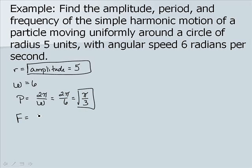And our frequency is equal to omega, angular speed, divided by 2 pi, the reciprocal of our period. So we end up with 6 over 2 pi, or a value of our frequency of 3 over pi.